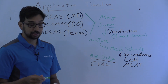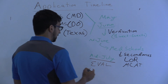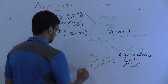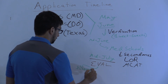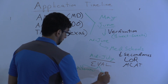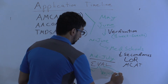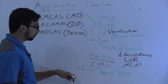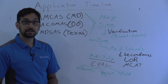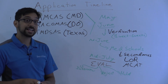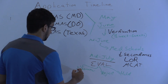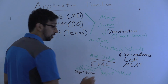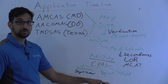Once a school looks at your application, they typically put you into one of a few categories: you either get an interview invitation, you get rejected, or you get put on hold. Depending on which category, they'll either invite you for an interview — which can happen anytime between September and March — reject you, or put you on hold, potentially sending an email saying you're on hold before they interview you.